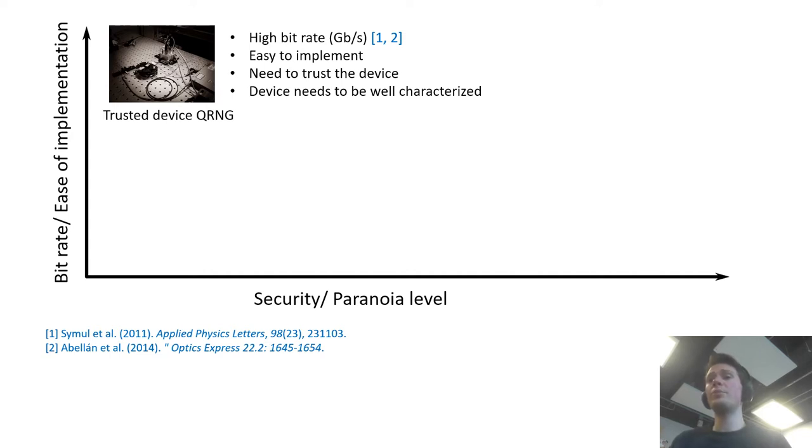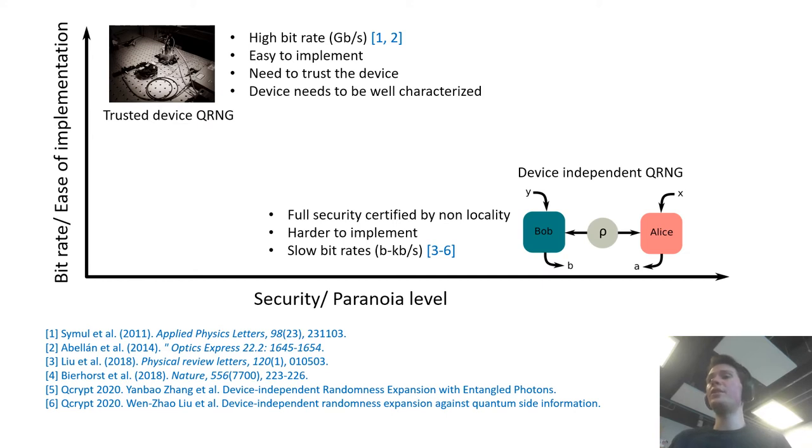Now on the other side of the spectrum you'd find the device independent QRNG. So these can provide fully secure random numbers independently of the measurement device or source of entropy that is certified by non-locality principle but they are a lot harder to implement and they have slow bit rates.